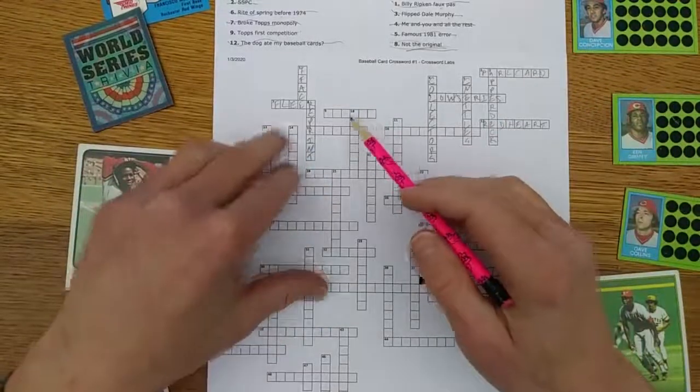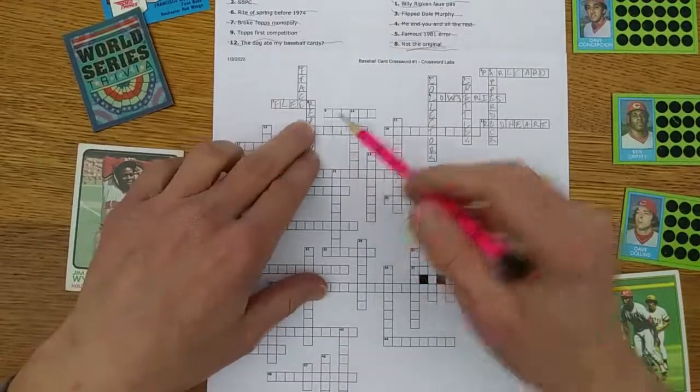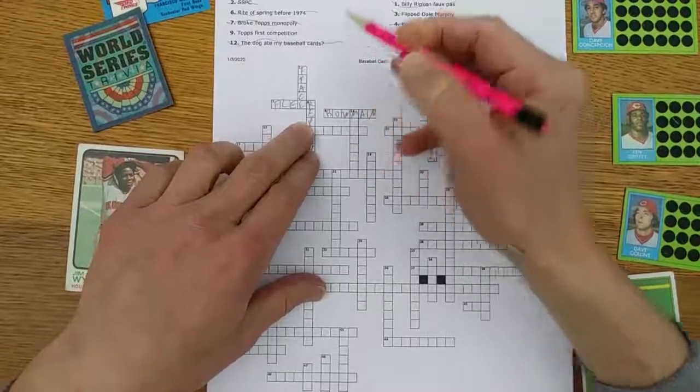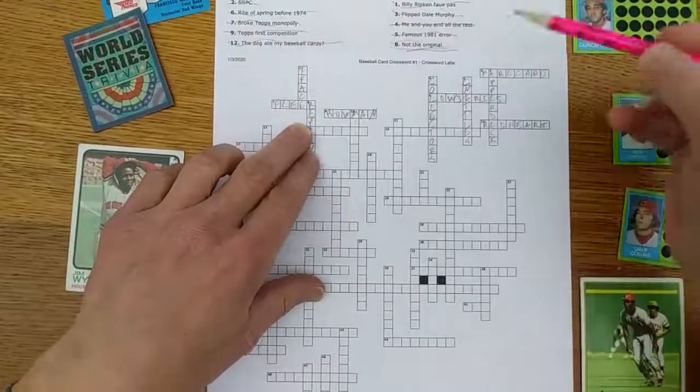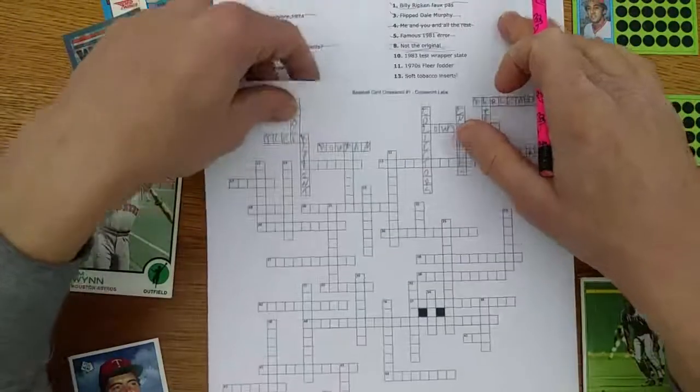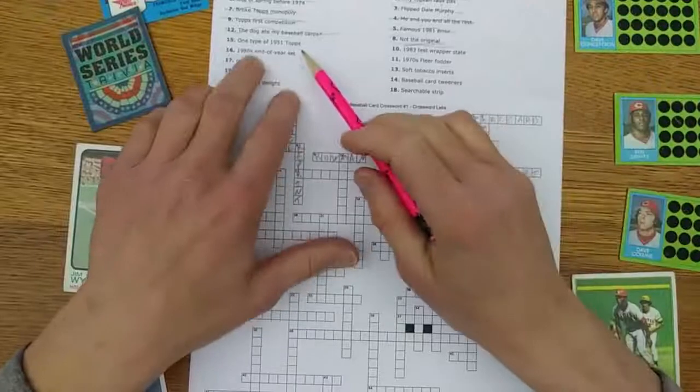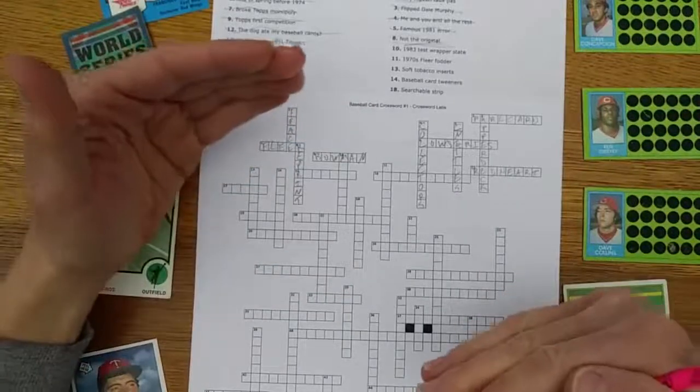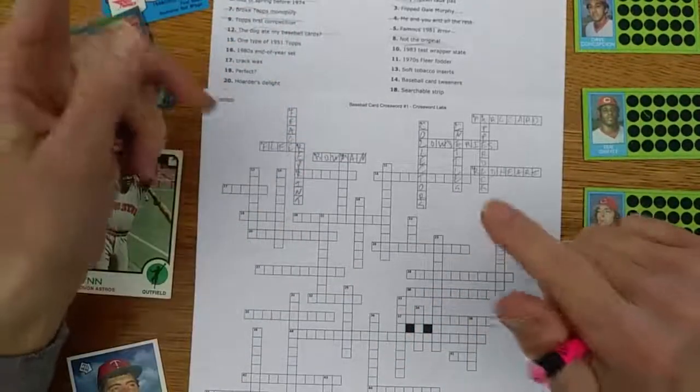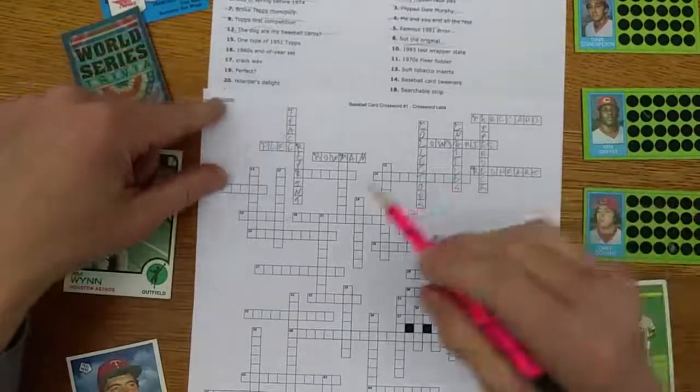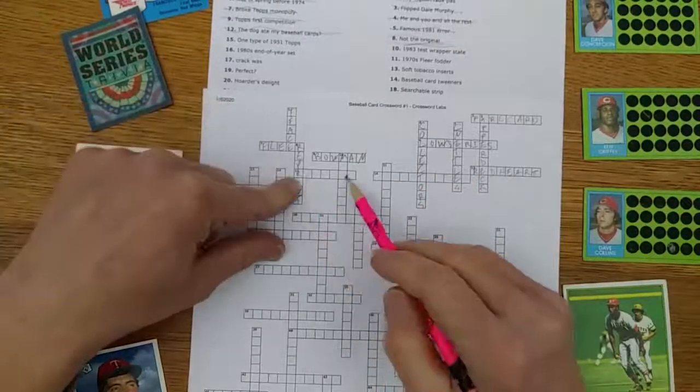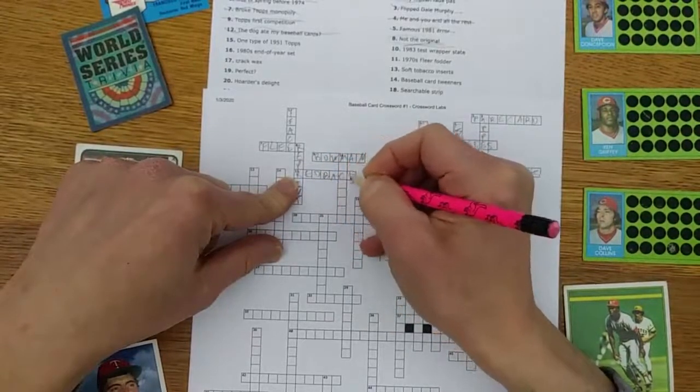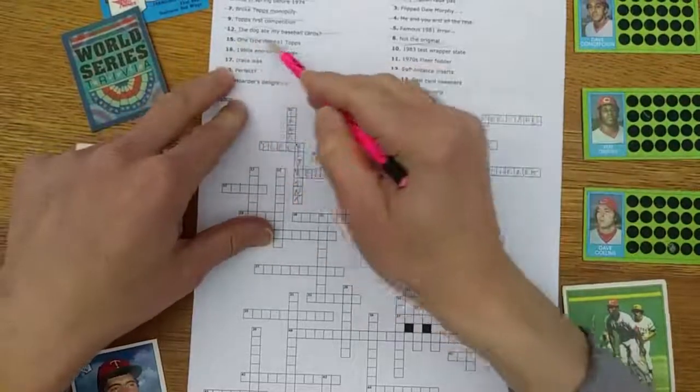Topps first competition was Bowman back in the 50s. So that's nine across. We're doing pretty good here so far. One type of 1951 Topps: In 1951, Topps came out with a few kind of tall boy all-star cards, and they also came out with red back and blue back playing cards. So let's see what 15 gives us. It starts with an R, so I'm going to say this is a red back. I mean, they look like playing cards. They had players on them.